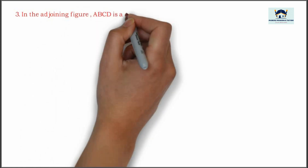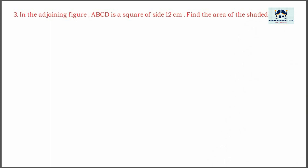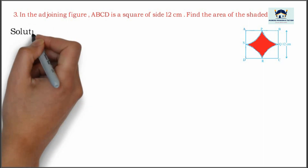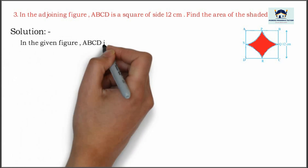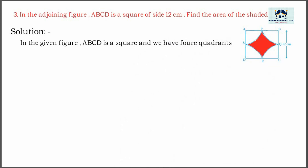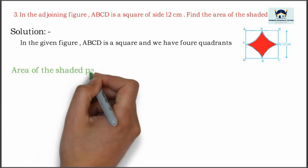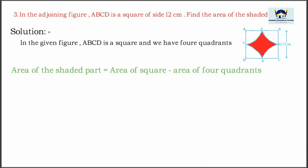Namaste viewers. In this video we are going to prove another problem. In the adjoining figure, ABCD is a square of size 12 centimeter. Find the area of the shaded region. In the given figure, ABCD is a square and we have four quadrants. The area of the shaded part is equal to the area of the square minus the area of four quadrants.